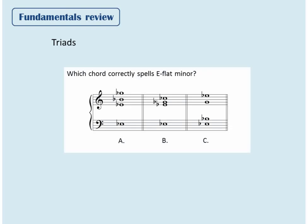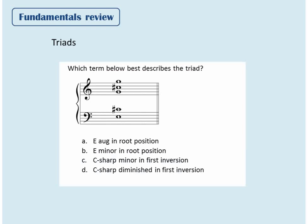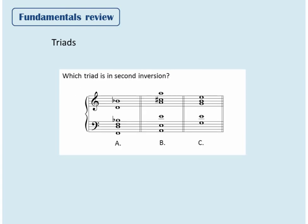Here's a typical question — which chord correctly spells E-flat minor? The answer is A. Here's another: which term below best describes the triad? It's a C-sharp diminished chord in first inversion. How about this one — which triad is in second inversion? The correct answer is A.